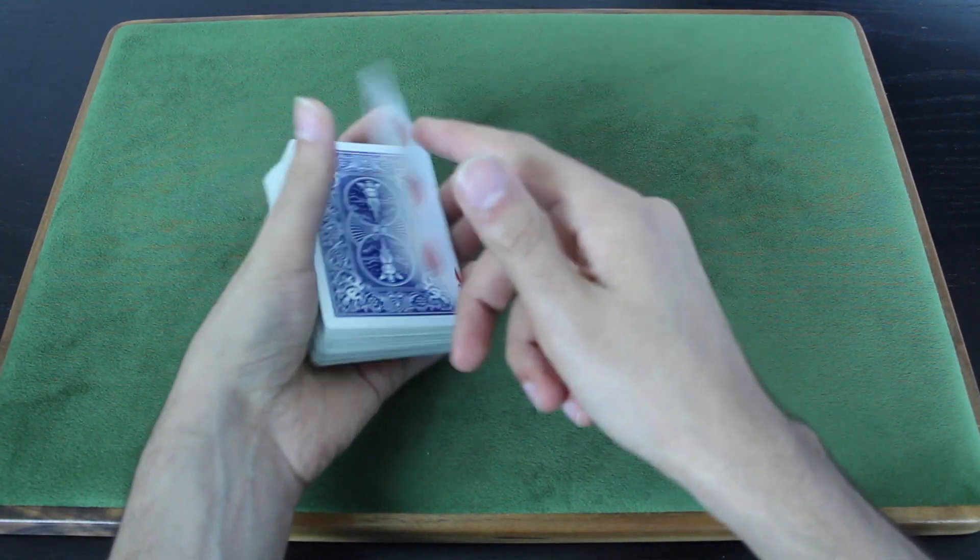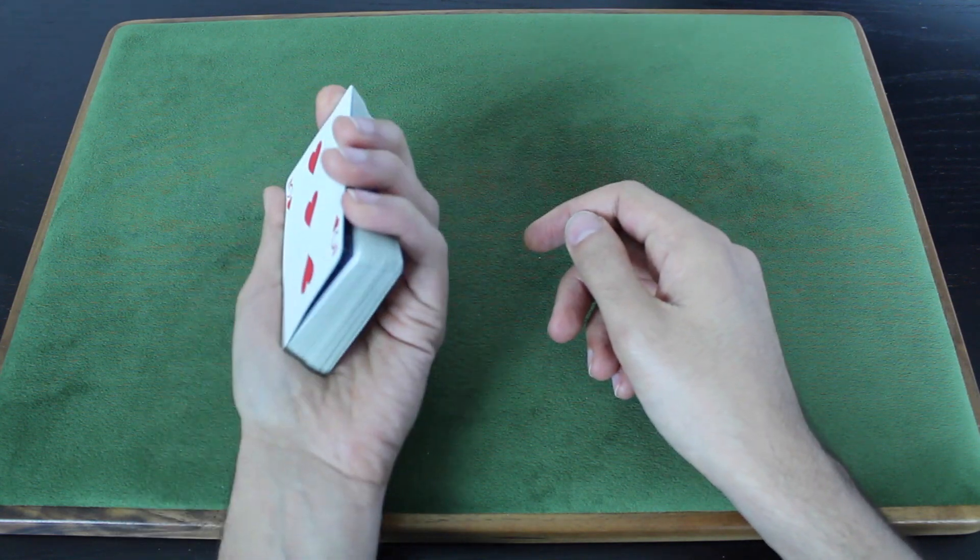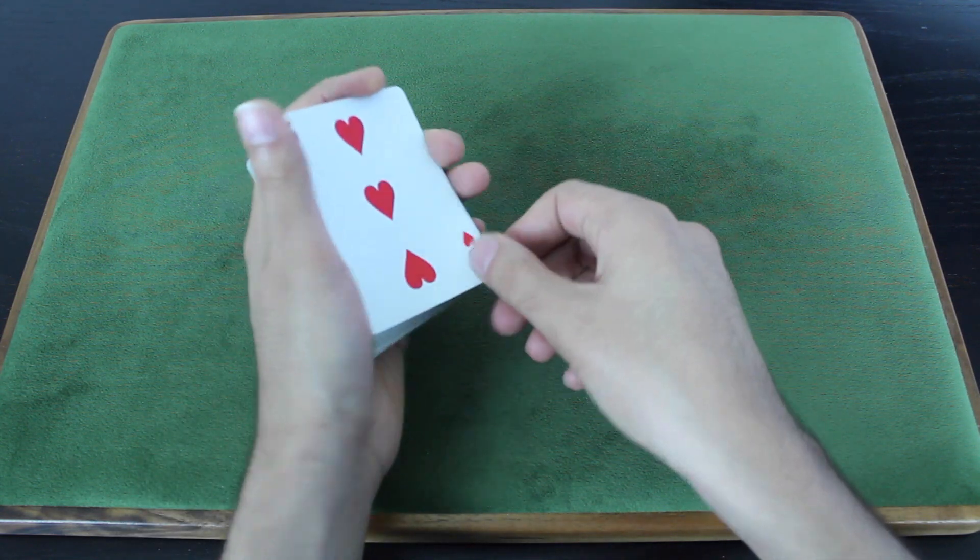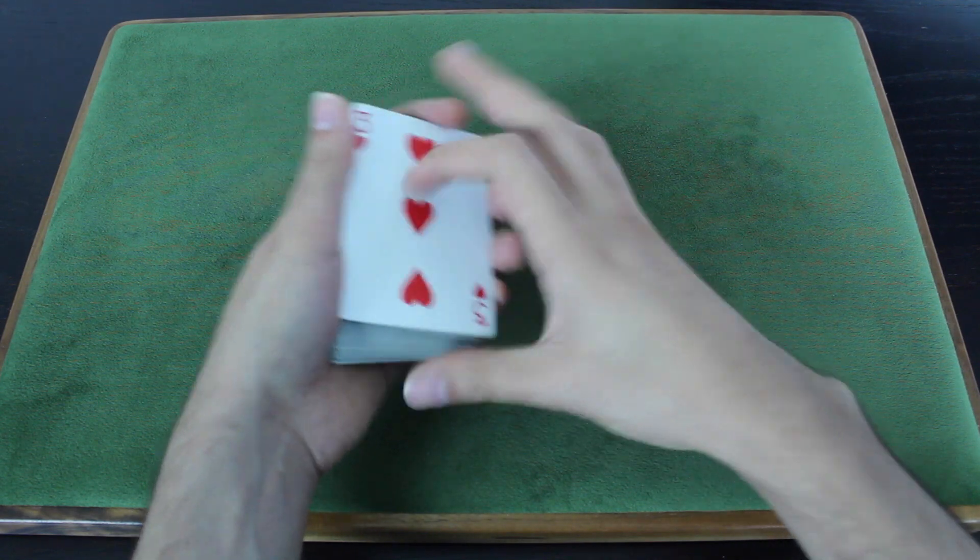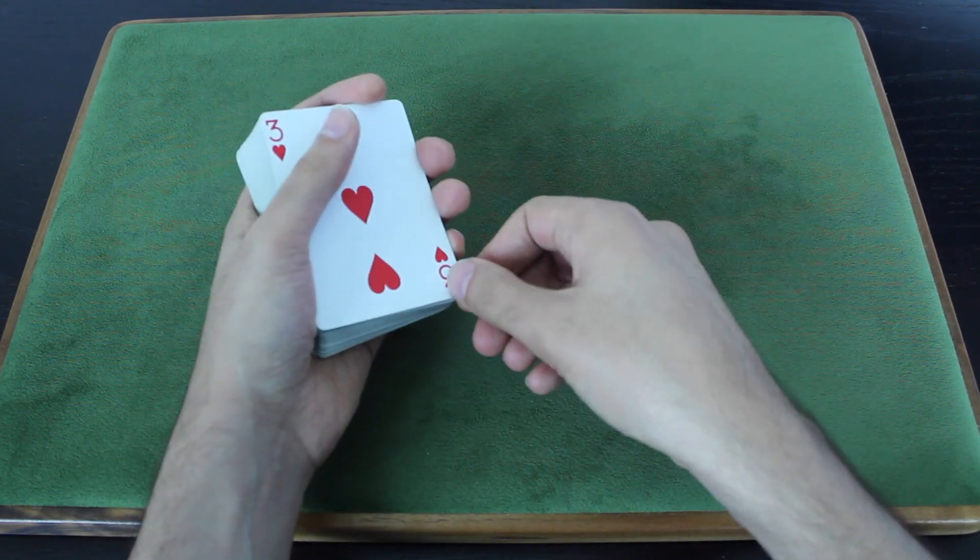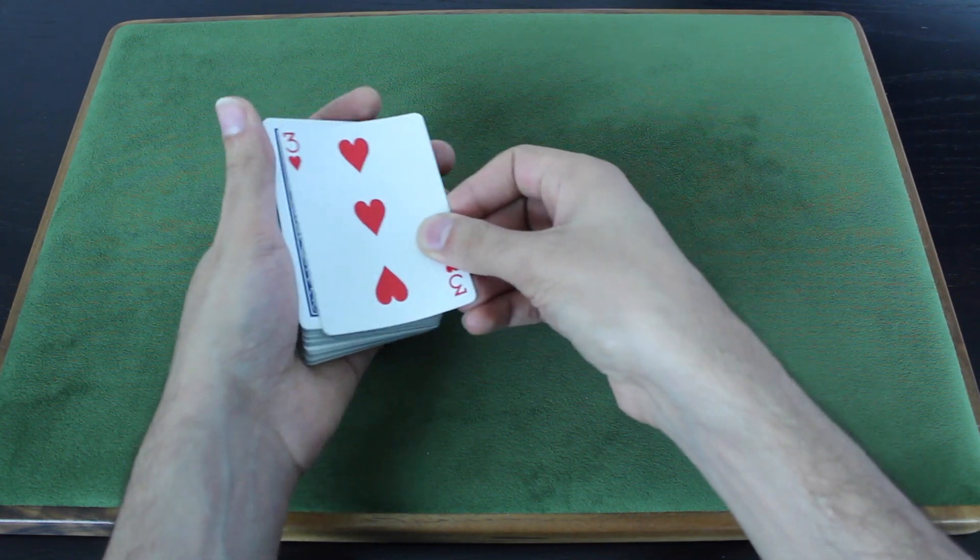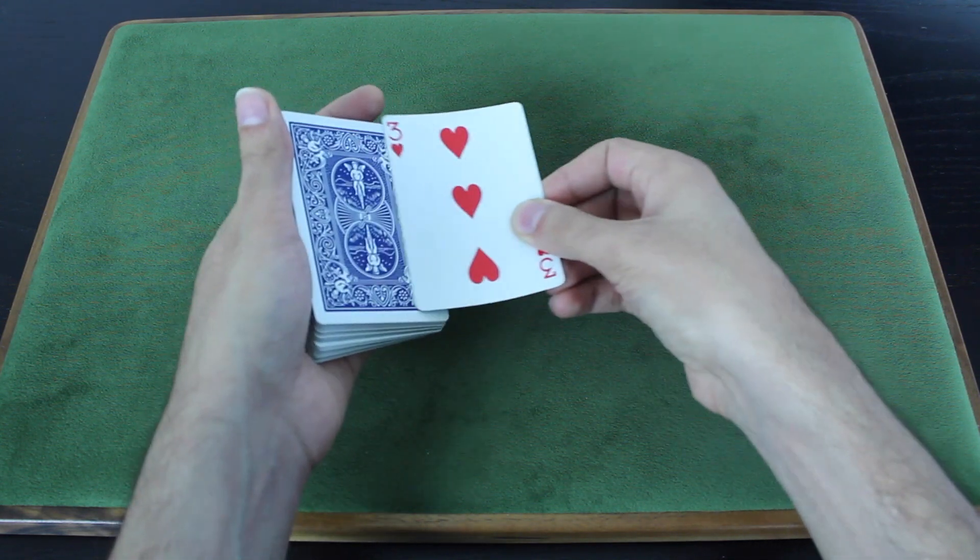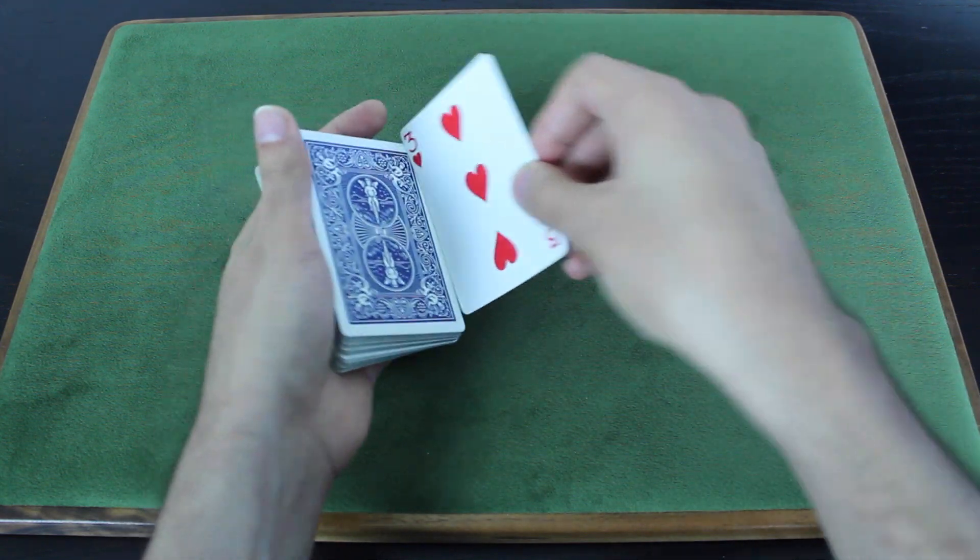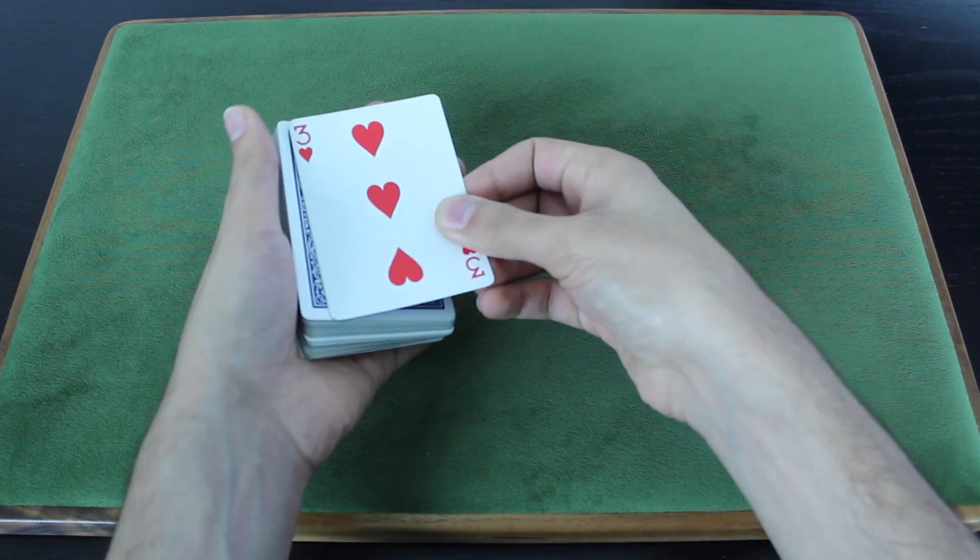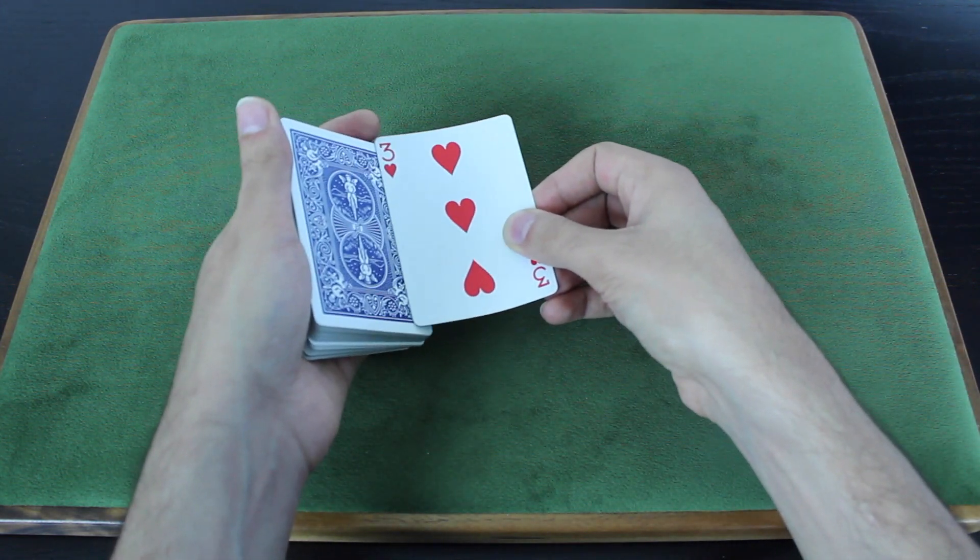So you have the face-up double on top of the deck. You have a pinky break beneath those two cards. And here's what you're going to do. You're going to grab the double from the right edge of the cards with your right-hand fingers and you're going to slide it to the right, almost as if you were about to just turn that double back face down. It starts off very similar to just turning the double back over.